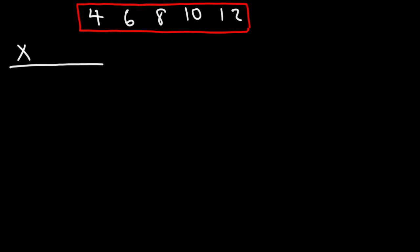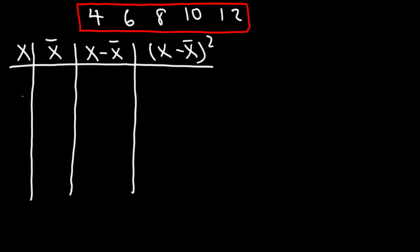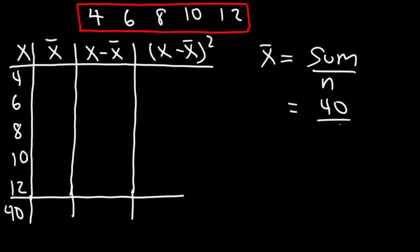Let's construct the table first. We have x, x-bar, x minus x-bar (the deviations), and then the square of the deviations. Our x values are 4, 6, 8, 10, and 12. Now let's calculate the sum of the first column: 4 plus 6 plus 8 plus 10 plus 12 is 40. The mean is the sum divided by n — the sum is still 40, and we still have 5 numbers, so the mean is 8.